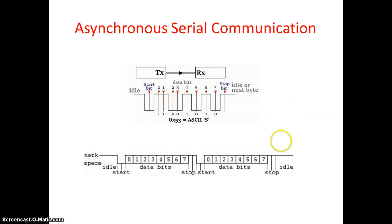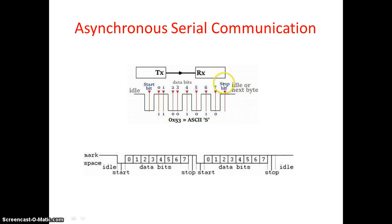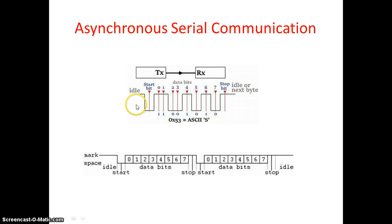To understand why we operate Timer A in sampling mode, consider this asynchronous serial communication protocol. In an idle state, the line is high. The start bit is indicated when the communication channel is pulled from idle (high) to low. So whenever there is a falling transition from the idle state, I can detect that as a start bit.